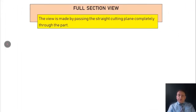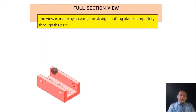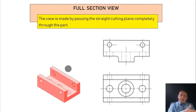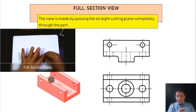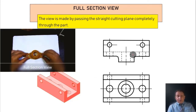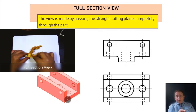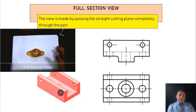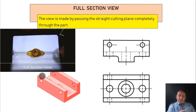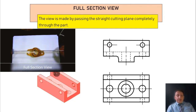This is the full section view. The view is made by passing a straight cutting plane line completely through the part — we completely cut the part from the beginning to the end. Here is a 3D printed part that I created to show you — I did the cut in the middle using the cutting plane line. Now I can easily split the views into two pieces.